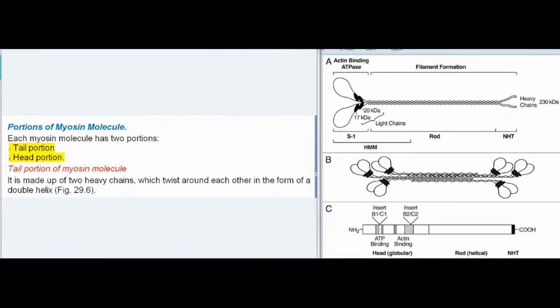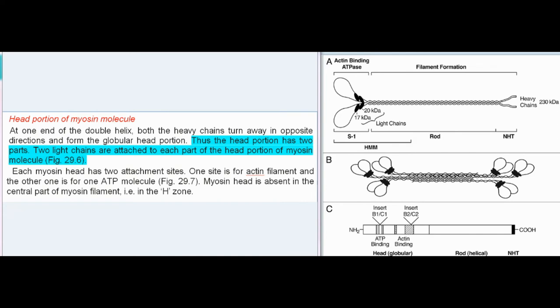Portions of Myosin Molecule: Each myosin molecule has two portions: tail portion and head portion. Tail portion is made up of two heavy chains which twist around each other in the form of a double helix. Head portion: At one end of the double helix, both the heavy chains turn away in opposite directions and form the globular head portion. Thus the head portion has two parts. Two light chains are attached to each part of the head portion of myosin molecule. Each myosin head has two attachment sites: one site is for actin filament and the other one is for ATP molecule. Myosin head is absent in the central part of myosin filament, i.e. in the H-zone.